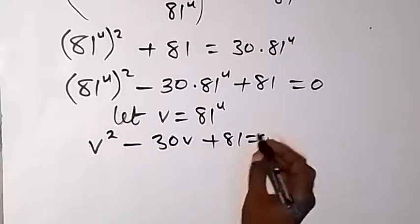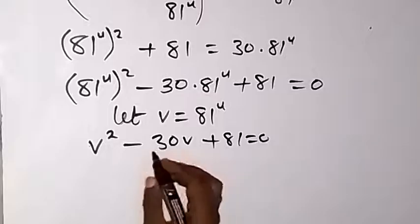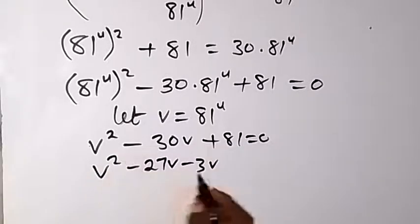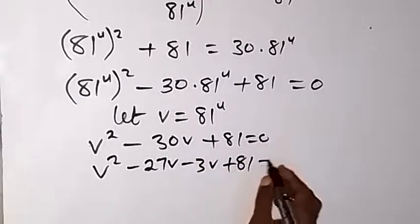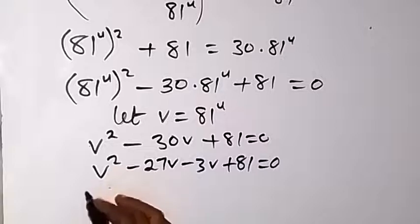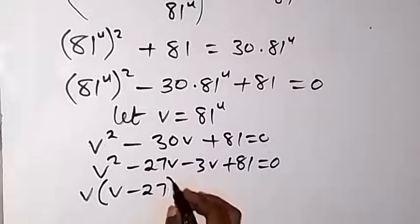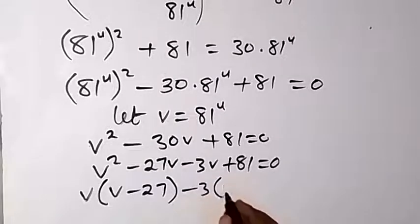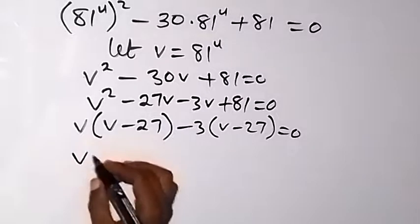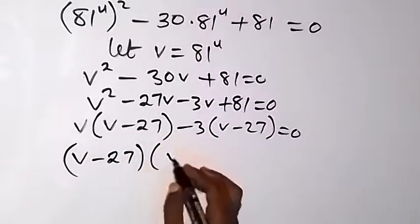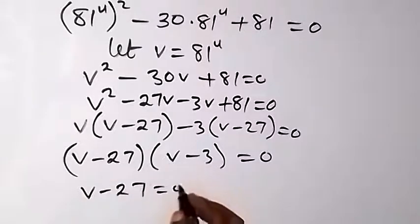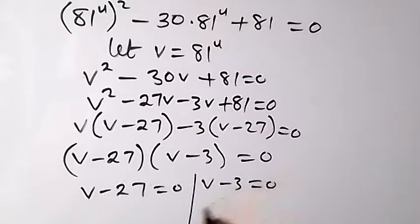We solve this quadratic by factorizing. We rewrite minus 30v as minus 27v minus 3v, so we have v² minus 27v minus 3v plus 81 equals 0. Grouping in pairs, what is common in the first two terms is v, giving v(v minus 27), and in the last two terms minus 3, giving minus 3(v minus 27), which equals 0.